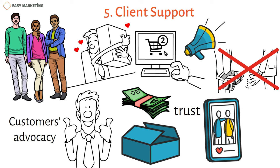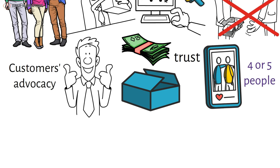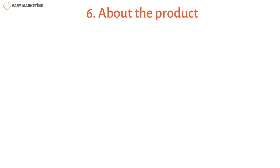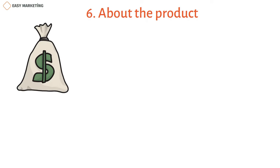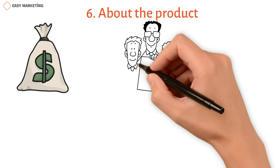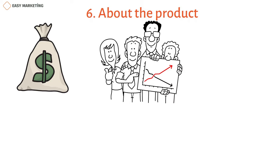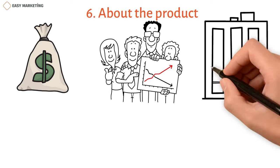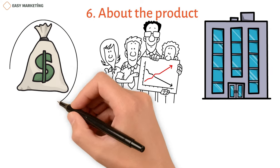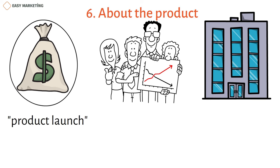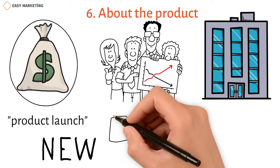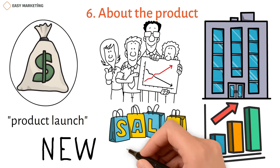For example, a single customer may tell up to four or five people they know about your product. Number six: product launch. The product launch is a type of marketing communication that costs a lot of money, requiring a separate team of professionals and a lot of planning. It is usually used by large companies. When a new product hits the market, it means the product has a new or better version. As soon as the product hits the market, sales go up and your brand's name and reputation grow.